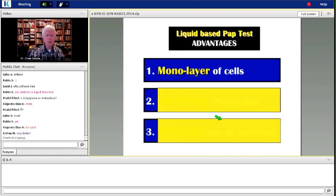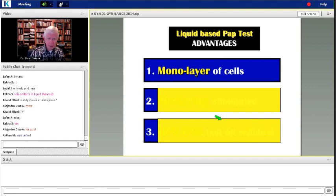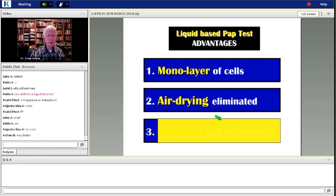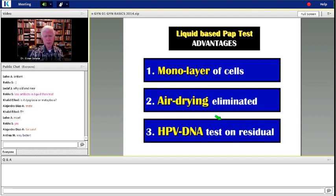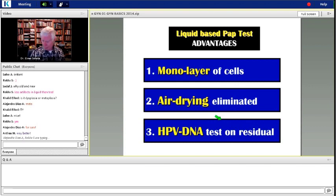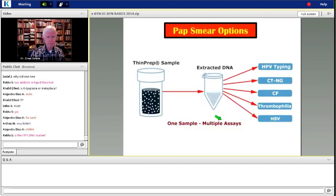We do use liquid-based methods at our institution. The advantage is the liquid-based, you have a single layer of cells, a monolayer of cells, rather than have them on top of each other. You eliminate air drying because you don't smear it. You put it into the liquid right away. And then the residual cells, which are still there and could be alive, can be used for HPV DNA testing without getting a separate specimen. And we'll talk about that when we look at chapter four. So here are the cells which are floating around in the fluid as a result of taking the brush and rinsing it off.